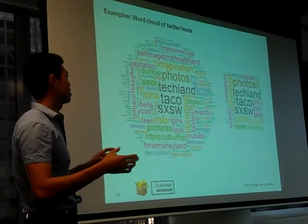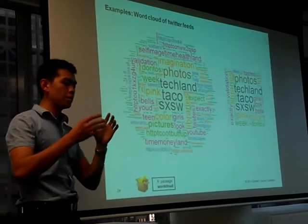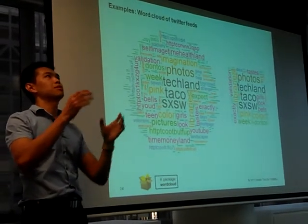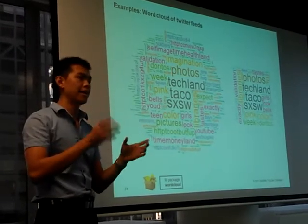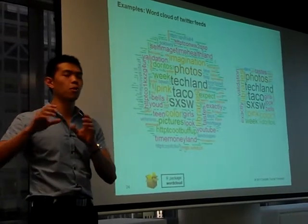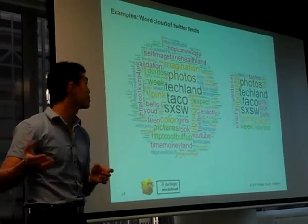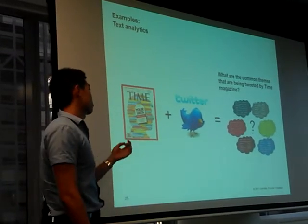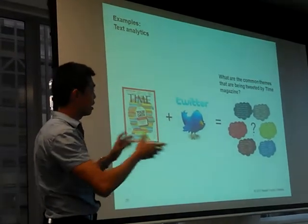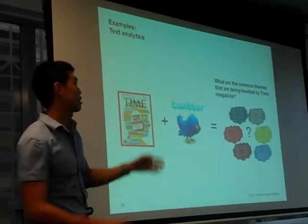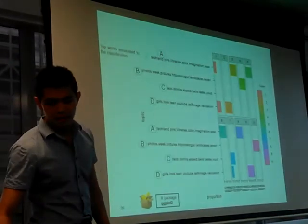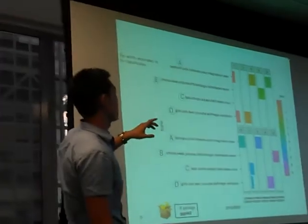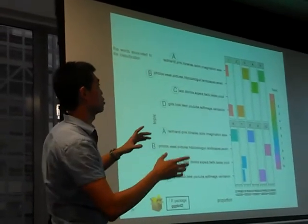That's when Latent Dirichlet Allocation comes in. Essentially the idea is that similar words from the same topic will co-exist together, and will not co-exist with words from a different topic. Essentially, what I was going to do is — can we sort of classify some of these tweets into separate topics? I've set the number of topics to four.